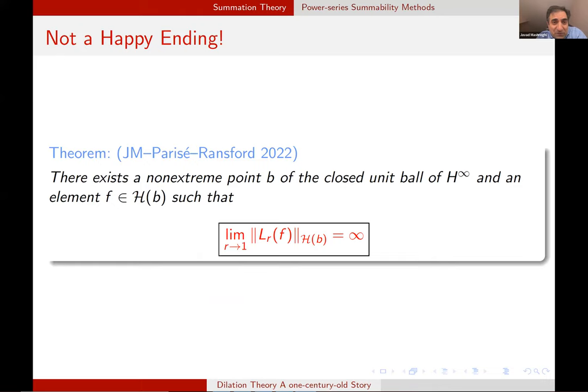Sorry that I end my talk with still disappointing news. This is a rather fresh result by Fricain, Ransford and myself. Same as we saw before. There is an element B non-extreme and there is an element in the de Branges-Rovnyak space H(B) for which this limit fails. And note that L_R of F is a major generalization of the dilation method. And still it fails. So we need to find something even stronger than that. And that's my last open question. Still we do not know the answer. Thank you for your attention. I hope you enjoyed this historical talk.